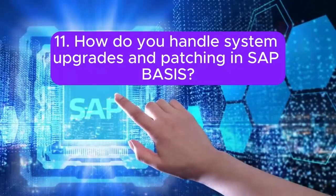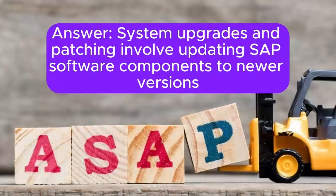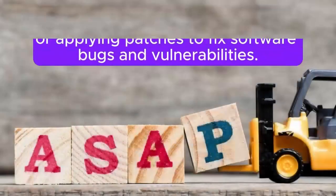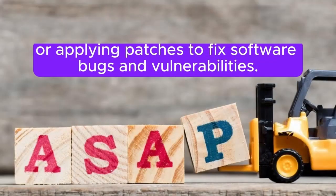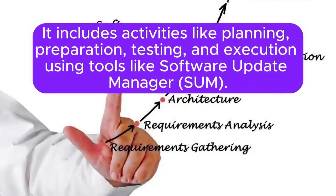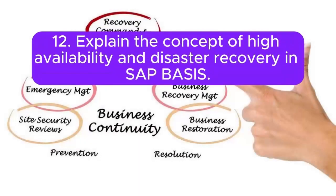Question 11: How do you handle system upgrades and patching in SAP BASIS? System upgrades and patching involve updating SAP software components to newer versions or applying patches to fix software bugs and vulnerabilities. It includes activities like planning, preparation, testing, and execution using tools like Software Update Manager (SUM).